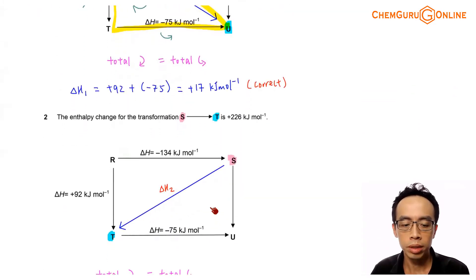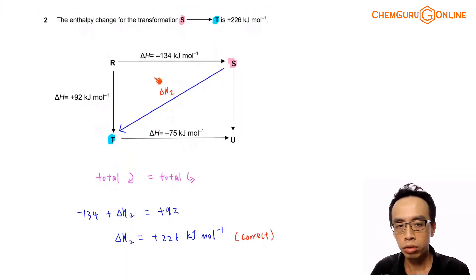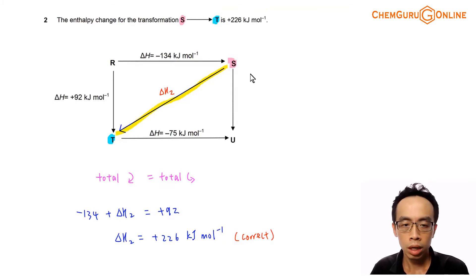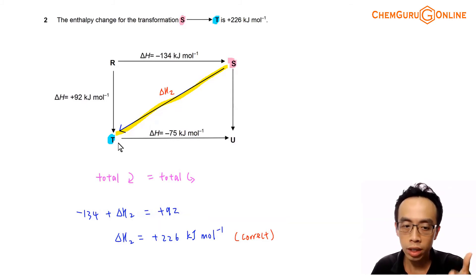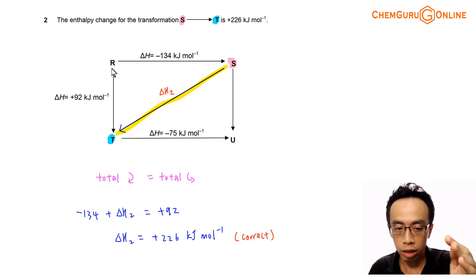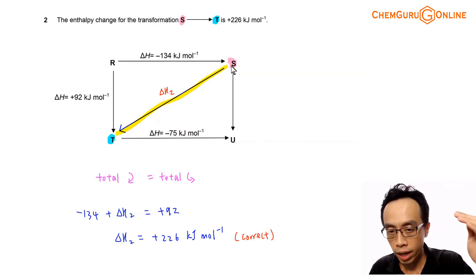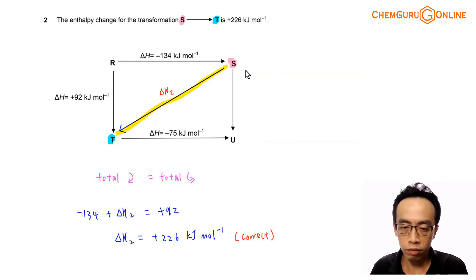Next, let's consider statement two: the enthalpy change for the transformation S to T is plus 226 kJ per mole. S to T corresponds to enthalpy change for reaction number two. According to Hess's law, the enthalpy change for S to T is equivalent to going S to R then R to T. We could also go S to U then U to T, but we don't have information for S to U, so we focus on the S–R–T cycle.